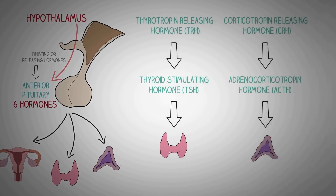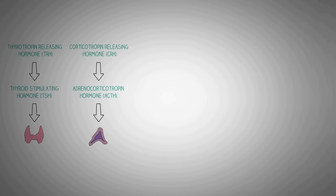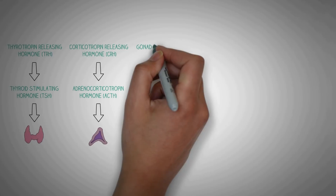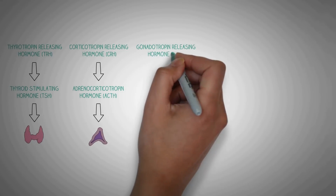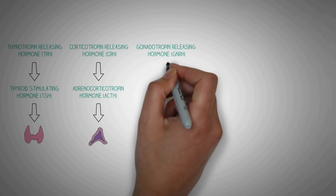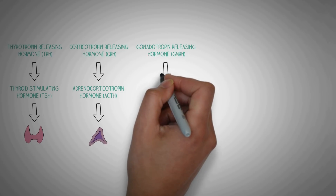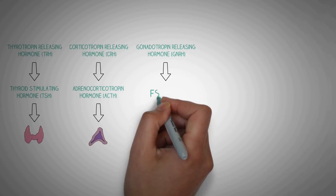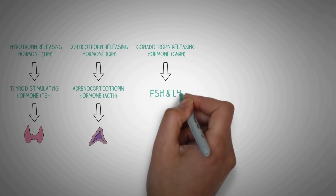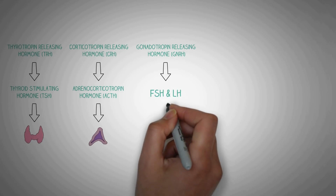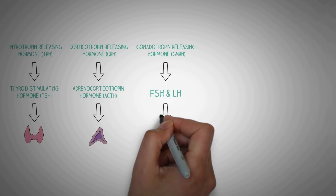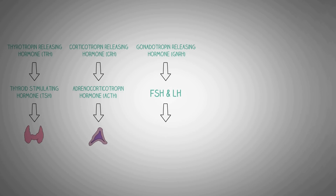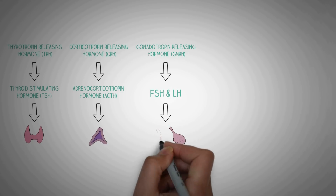Similarly, we have the gonadotropin-releasing hormone (GnRH), which acts on the pituitary causing the release of follicle-stimulating hormone (FSH) and luteinizing hormone (LH). These hormones act on the gonads, causing the release of sex hormones.